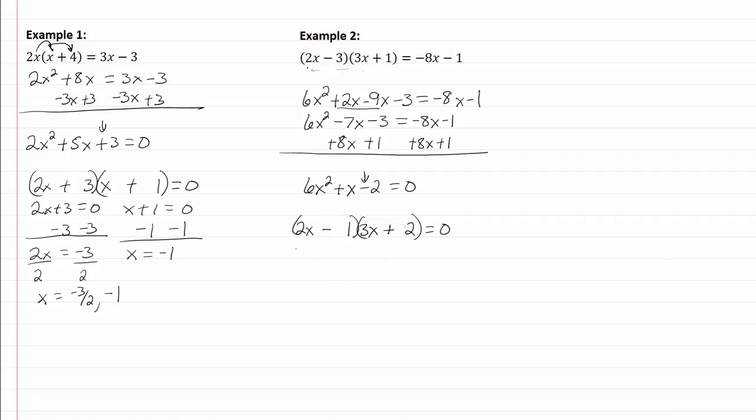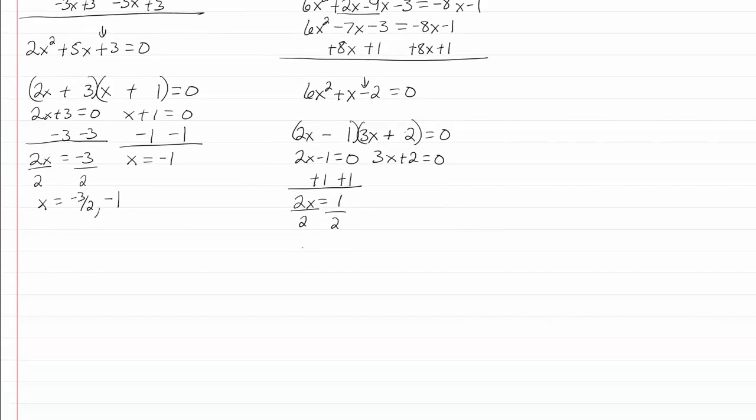And I'm ready to set each one of my factors equal to zero, so I do that. Now solving the first one, I'm going to add one to both sides. I get 2x equal to one, divide by two and I get x is equal to one-half.